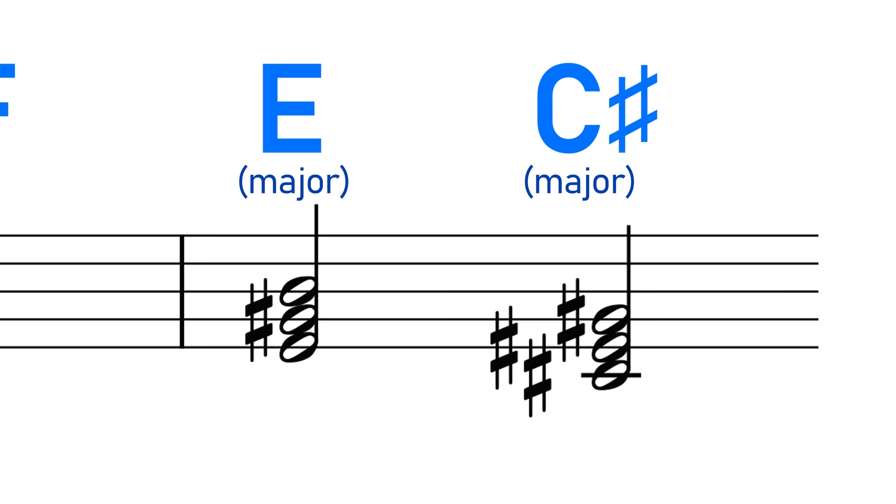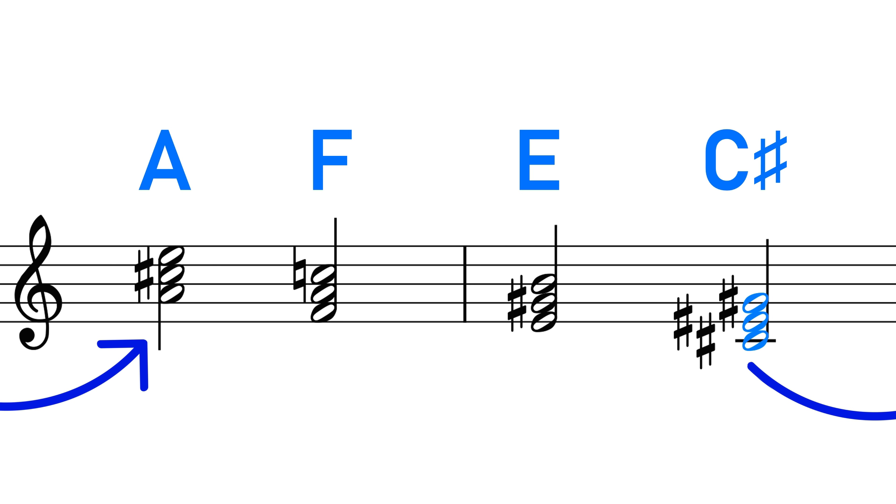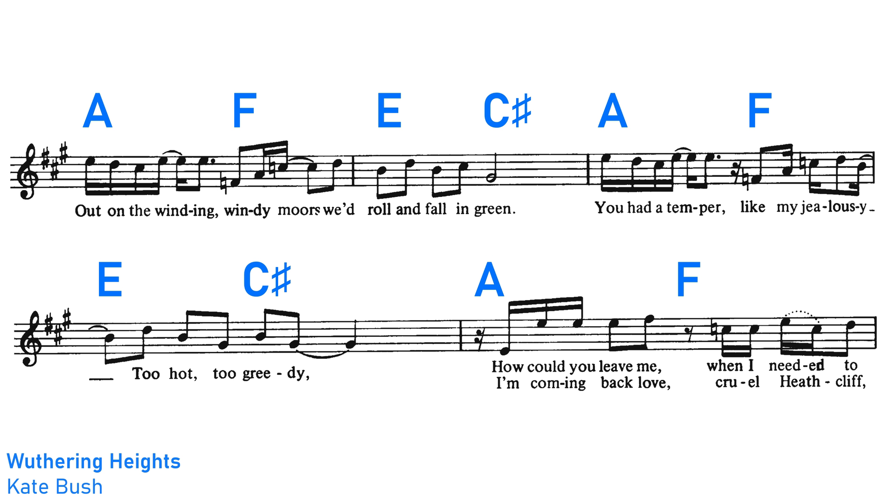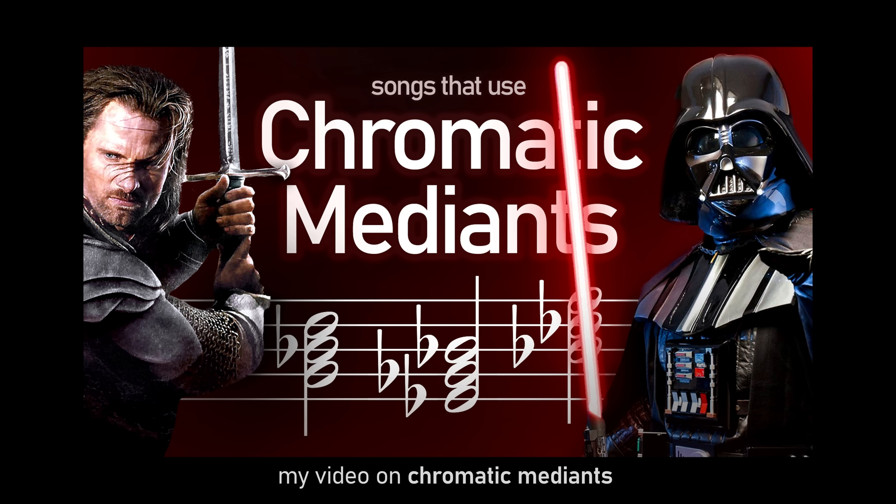And then when the progression loops around, the C-sharp chord here is also a third away from the A major chord that it precedes. So we've got a chromatic mediant relationship between almost every chord here, and all of these chromatic mediants lead to the sort of uncanny, slightly spooky vibe of this song. This is why chromatic mediants are used so often in film scoring, they have this sort of wrong yet right sound to them.